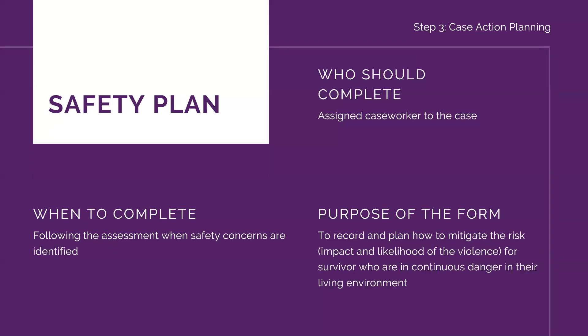Then we have the safety plan. This is part of step three, case action planning. It comes after assessment when safety concerns are identified. The planning process is conducted by the assigned caseworker. The purpose is to have documentation of the risks and plans to mitigate those risks for survivors living in a dangerous environment. It's particularly relevant for survivors of intimate partner violence. Not all survivors will require a safety plan. The plan should be developed in conjunction with the survivor, who best knows her route to safety.